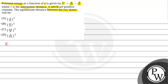So first of all let's see the key concept that we will use here to solve this. We are given that the potential energy is a function of r, where r is the interatomic distance between the two atoms. So here we need to find the equilibrium distance between the two atoms. Let's work with the potential energy.